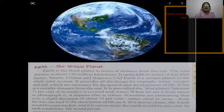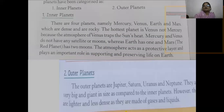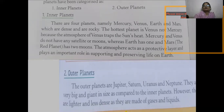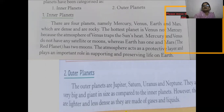The planets have been divided into two different types: inner planets and outer planets. The inner planets are Mercury, Venus, Earth, and Mars, which are dense and rocky. They are called the inner planets. The hottest planet is Venus, not Mercury, because the atmosphere of Venus traps the sun's heat. Mercury and Venus do not have any satellites or moons, whereas Earth has one and Mars has two moons.